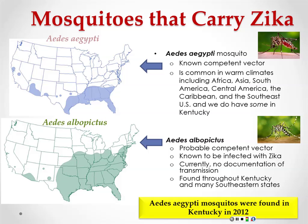Where are these Aedes mosquitoes in the U.S.? The Aedes aegypti, the mosquito currently carrying Zika in Latin and South America, is found mostly in the southern and southeastern U.S. The Aedes albopictus, a cousin species, is found all the way up here in Kentucky and most of the eastern U.S. We did have Aedes aegypti in Kentucky in 2012, but we do have Aedes albopictus all over our city.